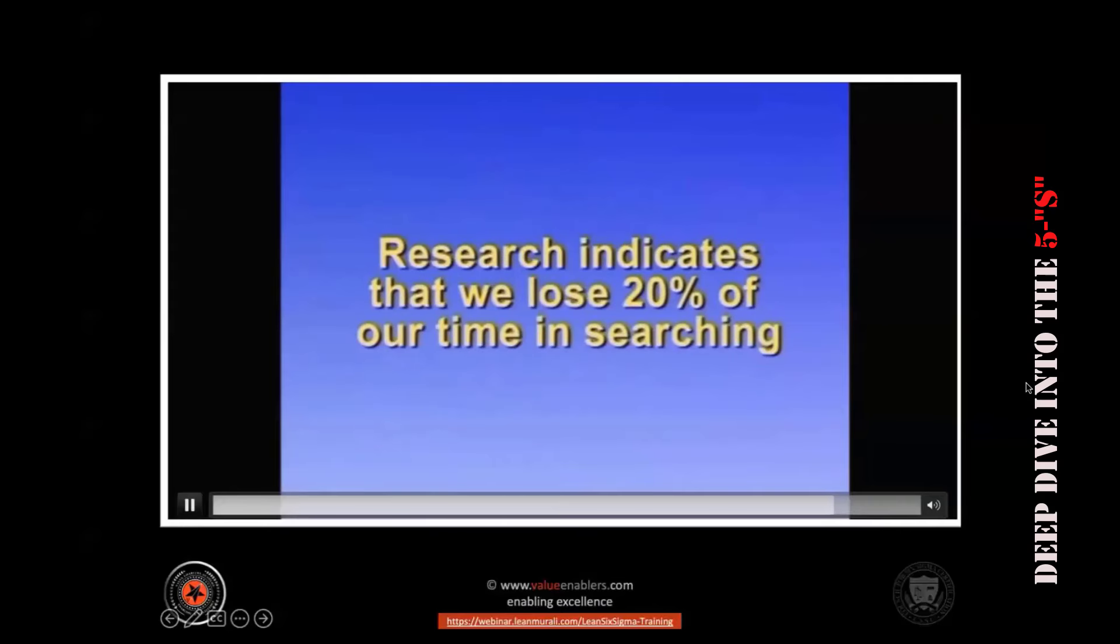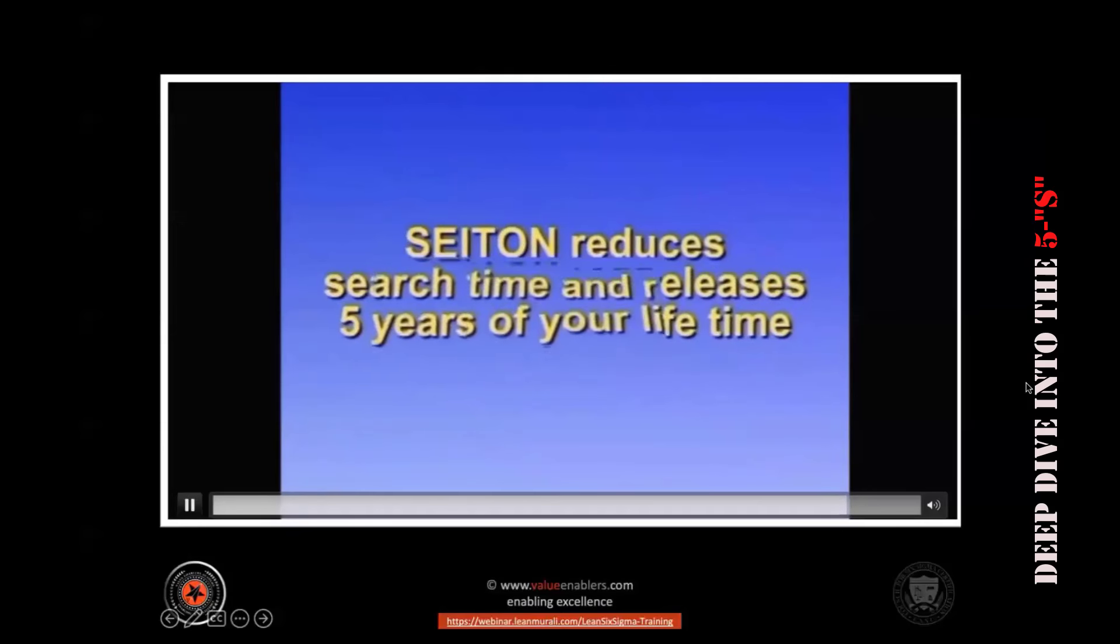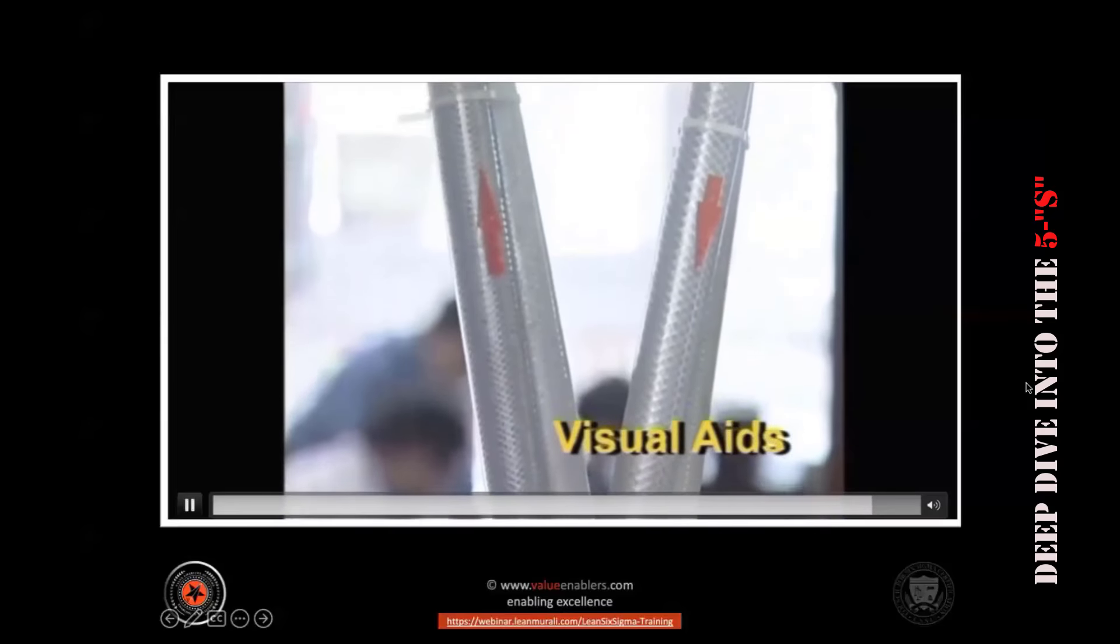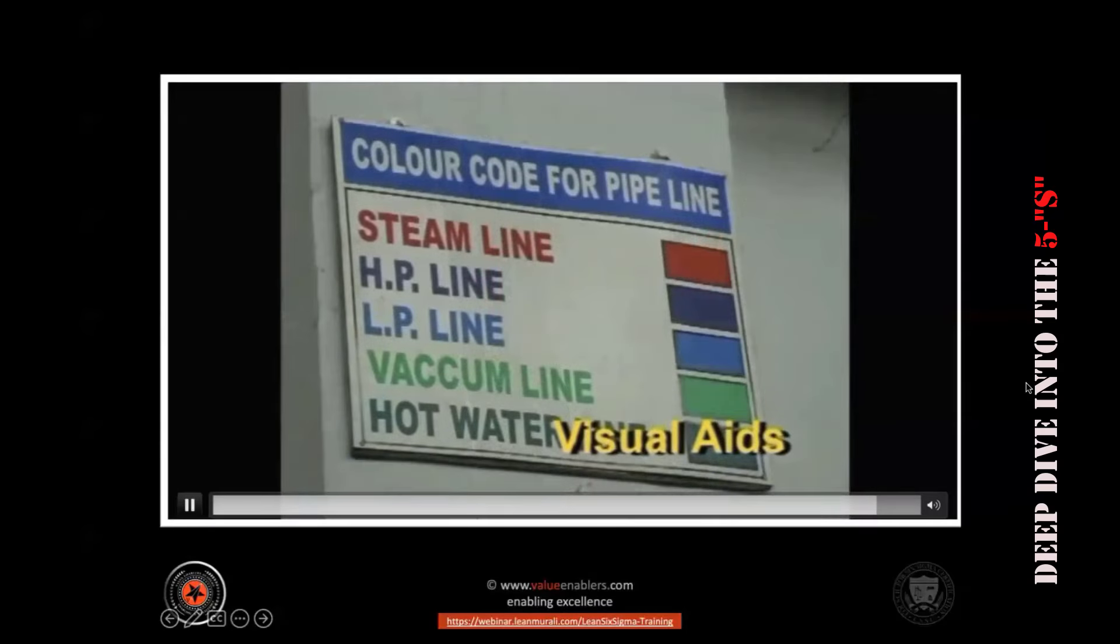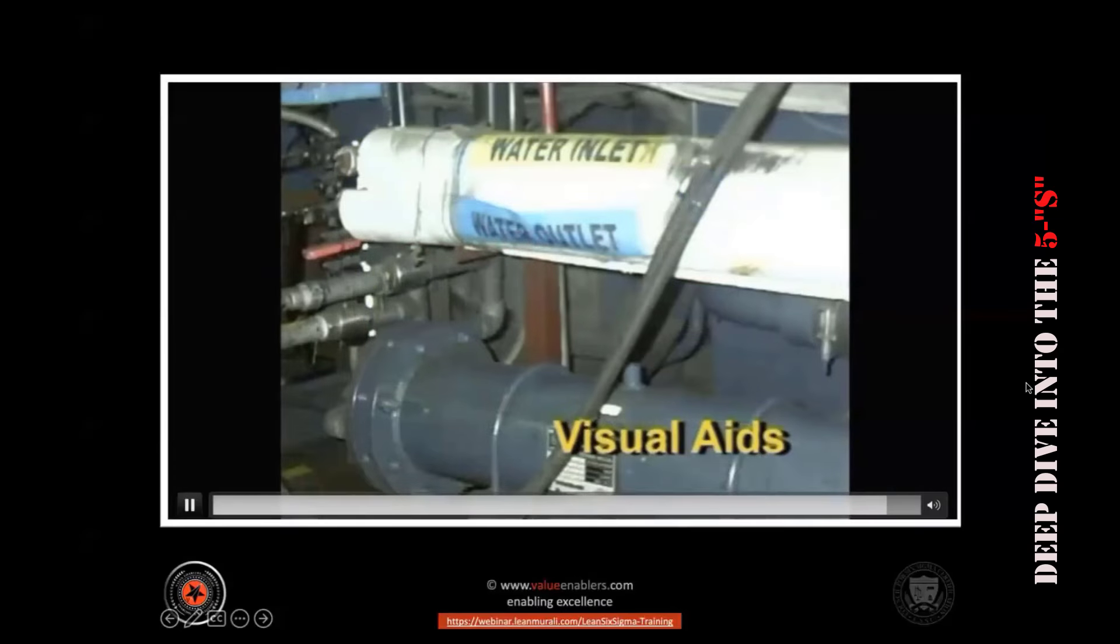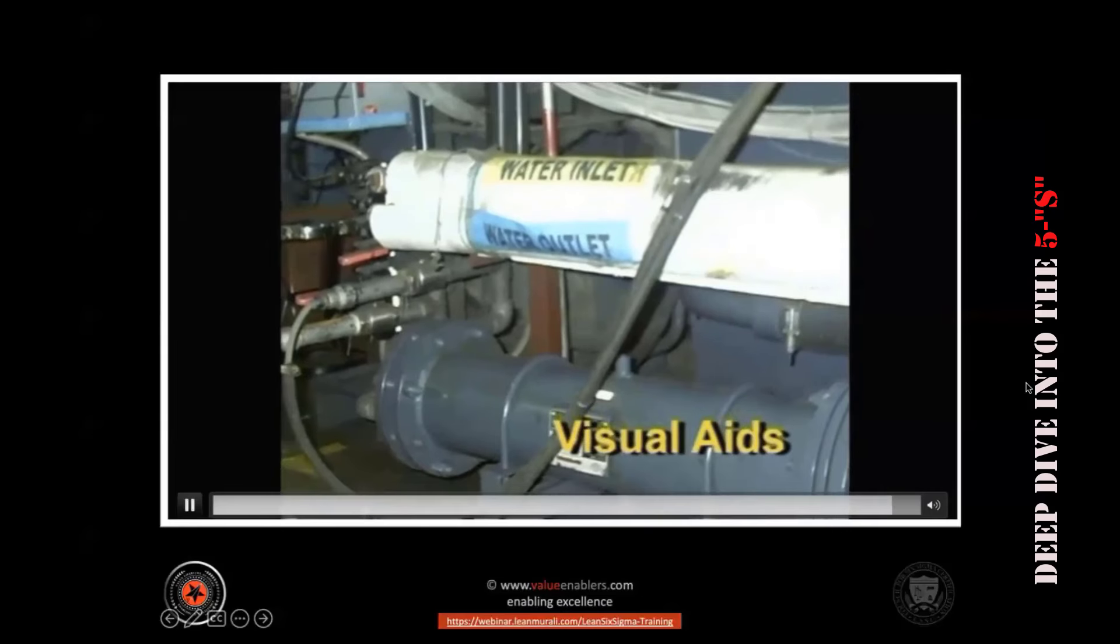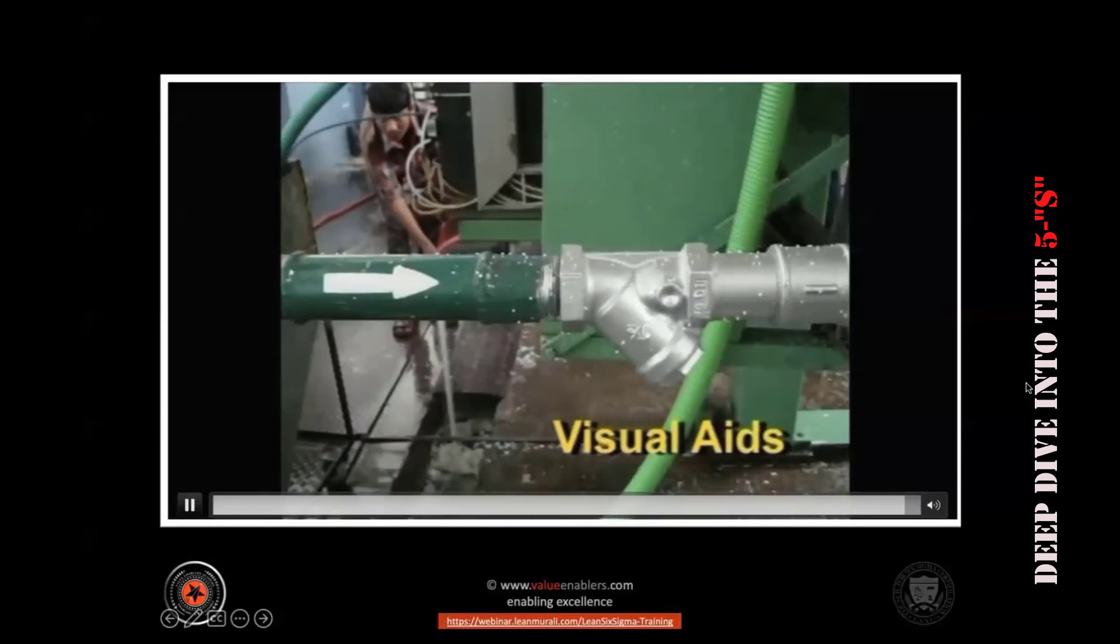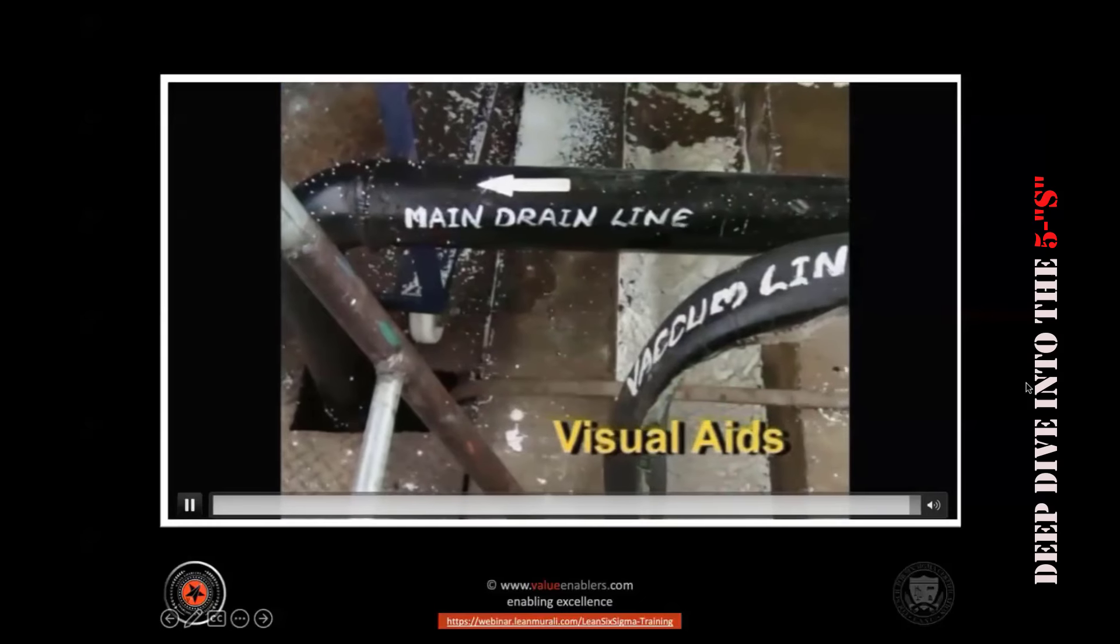In fact, research indicates that we lose 20% of our time searching for things. Systematic arrangement reduces search time and releases five years of a person's lifetime. And that's not where it ends. An interesting outcome is in the larger picture. When the flow directions of air, water, steam, and oil are marked out, a certain clarity is achieved about process and temperature is reduced.